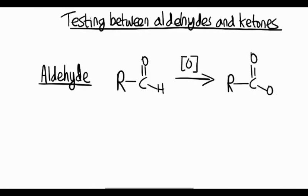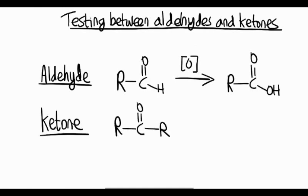A ketone, on the other hand, contains a carbonyl group, or the C double bond O group, in the middle of a chain. And because of that, it can't be further oxidized. Now this difference in the ability to oxidize aldehydes and ketones forms a basis for the test between the aldehydes and ketones.